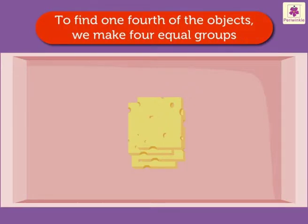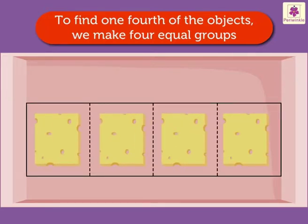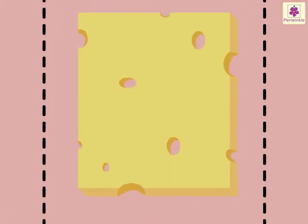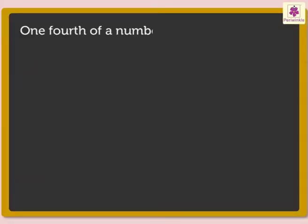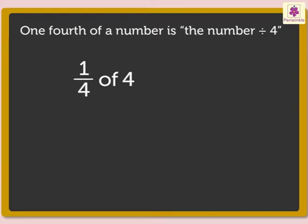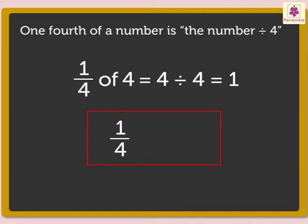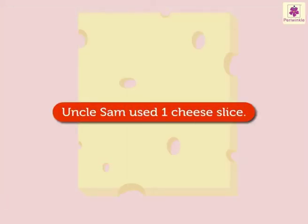To find one-fourth of four cheese slices, we make four equal groups. Each group has one cheese slice. To find one-fourth of a number, we can also divide the number by four. So, one-fourth of four is equal to four divided by four, which is equal to one. We say one-fourth of four is one. Uncle Sam used one cheese slice in the sandwich.